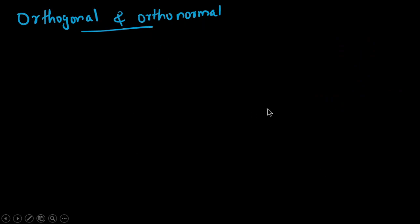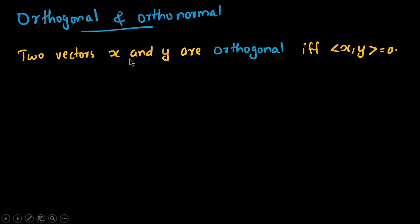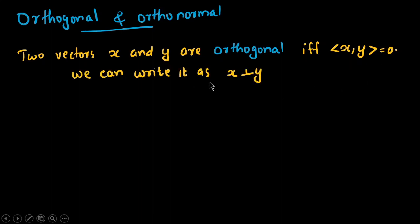That's how we calculate the angle between vectors. Now for the orthogonal vector and the orthonormal vector — we call two vectors orthogonal when the angle between them is 90 degrees. Two vectors x and y are orthogonal if and only if their inner product is equal to zero. We can write this as x perpendicular to y using the perpendicular notation.